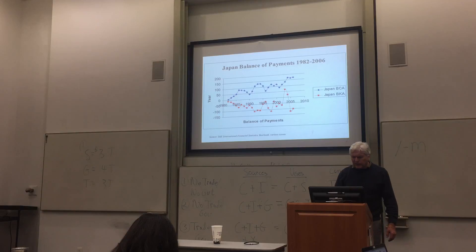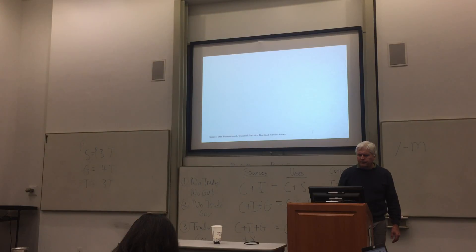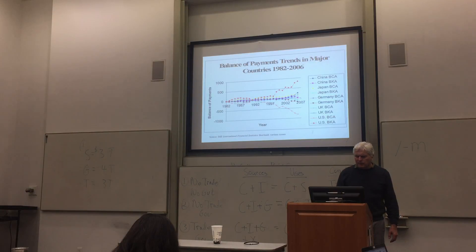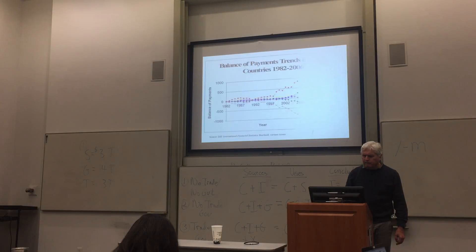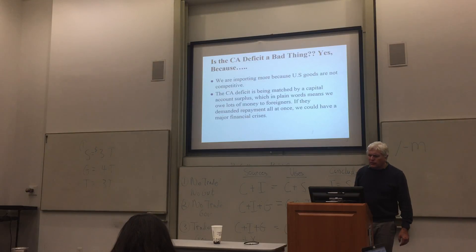I've got a bunch of graphics in here. This is the Japanese current account and capital account. You see Japan, really, again, for the past 30 years, has had a current account surplus. Here's just some graphics about that. Here's some other countries looking at their surpluses and deficits. This really just says in graphic form what my cool little map said earlier. So what I wanted to end with is kind of this question. Is the current account deficit a bad thing or a good thing?